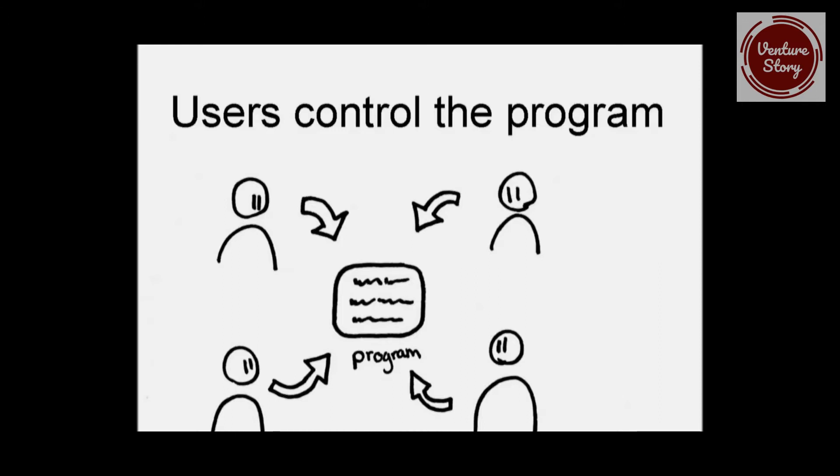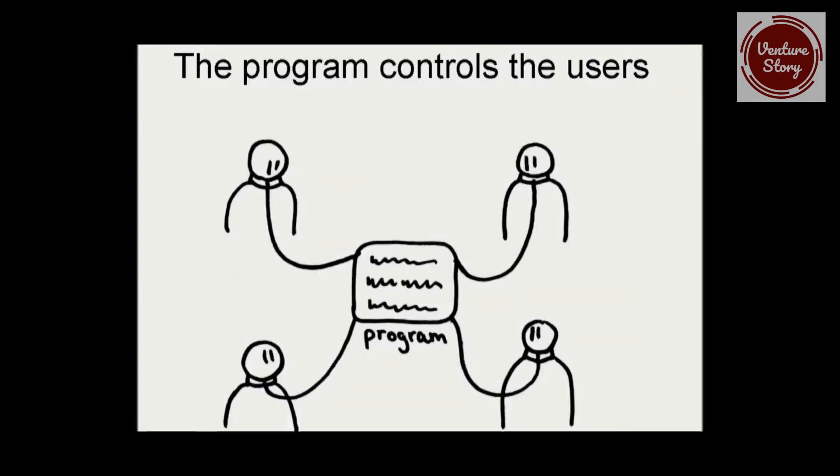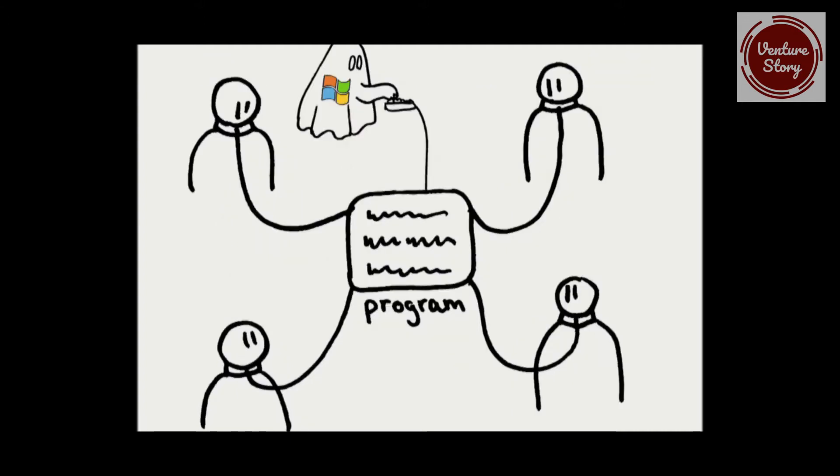But if any of those freedoms is missing, then the users don't control the program. Instead, the program controls the users and the developer controls the program. So that means this program is an instrument of unjust power for its developer over the users. That means the users don't have freedom. That's non-free, proprietary software, which we've got to get rid of.